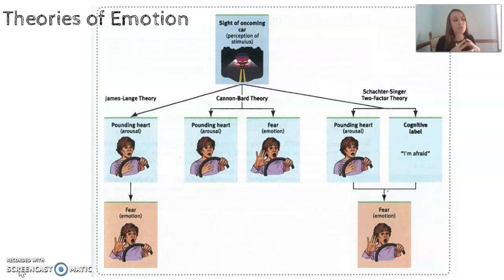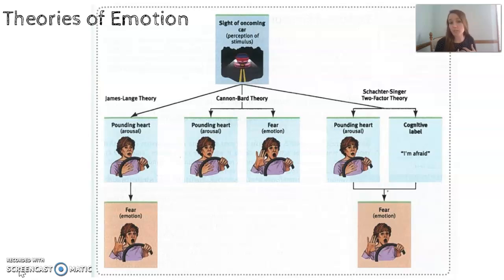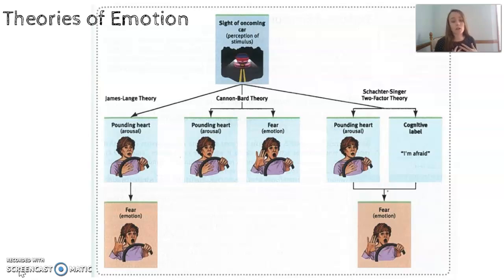James-Lange would say the very first thing that happens is a biological change in the body — your heart starts to race when you see the car. Because your heart starts racing, that helps you then know what emotion you're feeling. Heart starts to race, then I feel afraid. I remember James-Lange because J for James is like 'jump' — there's a biological arousal inside the body, maybe your stomach drops or heart races. That's the jump, and then you 'label' that emotion. So James-Lange: jump and label — because I've had a change in my body, therefore I know I have this emotion.